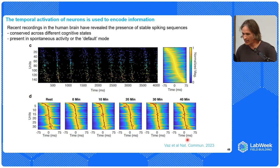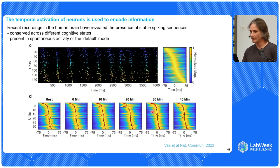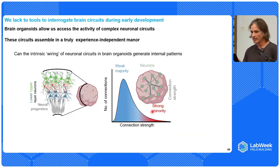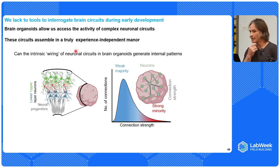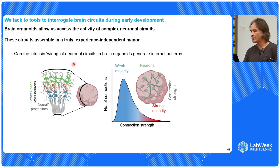Recent recordings in humans have shown the presence of stable spiking sequences that are conserved across cognitive states and are also present in the default mode. We lack the tools to interrogate brain circuits during early brain development, but brain organoids allow us access to the activity of complex circuits. What is cool is that these circuits assemble in an experience-independent manner. Can the intrinsic wiring of neural circuits in brain organoids generate internal patterns? That was the question we asked.